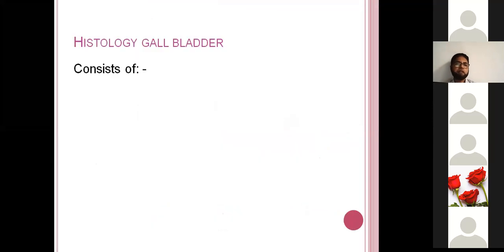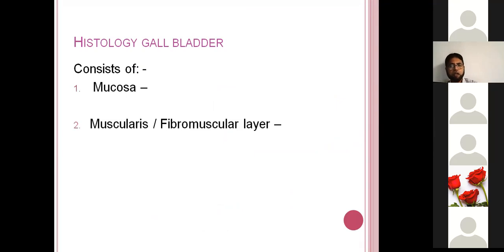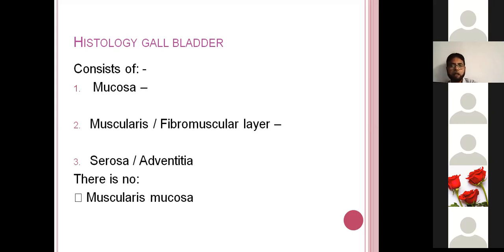Next is the gallbladder. The gallbladder is different from other parts of the gastrointestinal tract. It consists of mucosa, muscularis externa, and serosa. There is no submucosa and there is no muscularis mucosae in the gallbladder. So it consists of 3 layers: mucosa, muscularis externa or smooth muscle layer, and serosa or adventitia — but without muscularis mucosae and without submucosa.